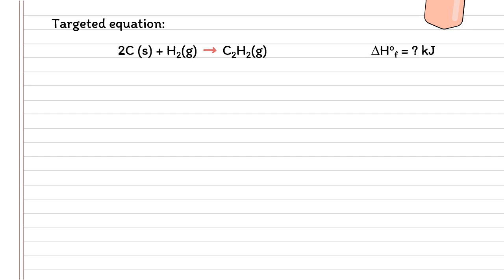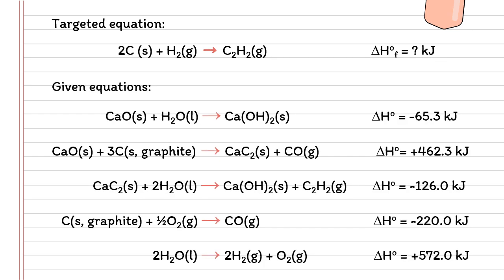We need to rewrite the given equations. The algebraic method requires us to keep an eye on the species present in the targeted equation — we want to keep only those species. Let's check whether we have carbon: we have 1 carbon here, 3C, and 1C. Followed by our hydrogen gas, and our C2H2 is right here.